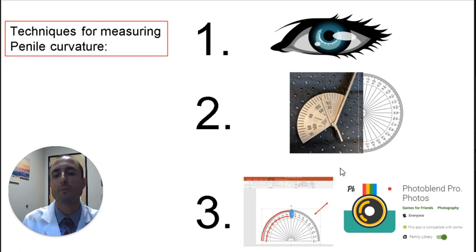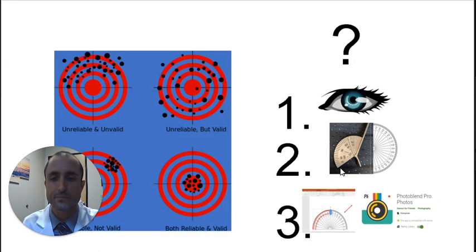There are three different ways to measure penile curvature. Visual inspection, use of a goniometer, or use of technology, app or software. We currently don't know the validity or reliability of any of these techniques at estimating penile curvature.